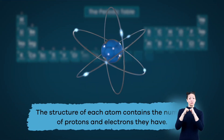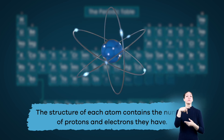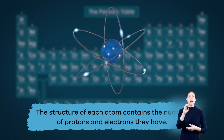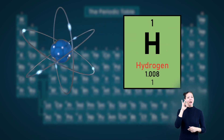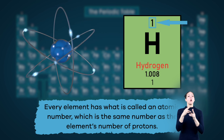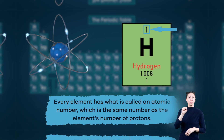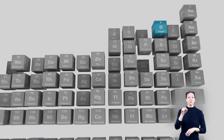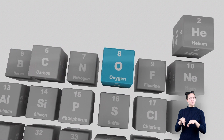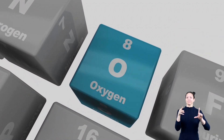The structure of each atom contains the number of protons and electrons they have. Because of this, every element has what is called an atomic number, which is the same number as the element's number of protons. Why is this atomic number important? Well, that is where the periodic table of elements comes in.